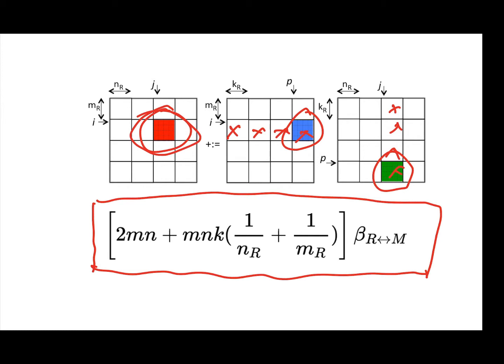What you notice is that the larger MR and NR are, the smaller the overhead is due to moving data between registers and memory. So we'd like to somehow come up with a way of allowing MR and NR to be as large as possible, of course limited by the number of registers that are available. So how can we accomplish that?